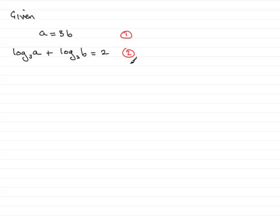And the method I'm going to use is substitution. That is, I'm going to substitute for a in equation 2. Wherever I see an a, I'm going to replace it with 3b. So we need to tell the reader that's what we're doing, so I'm going to say sub 1 into equation 2.